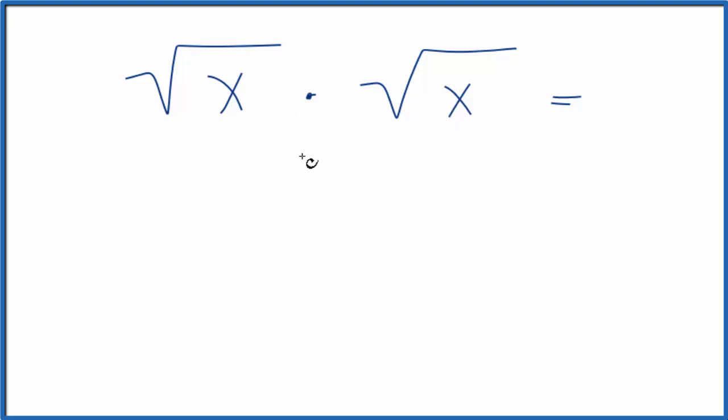just put some numbers in to see the pattern. I'm going to choose square root of 4 times the square root of 4, so I'm saying x is 4. What do I end up with? The square root of 4 is 2, so 2 times 2 gives me 4. So I'd expect the square root of x times the square root of x would just be x.